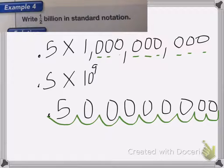And fill in my commas. 1, 2, 3, comma, 1, 2, 3, comma. I end up with 500 million. And that's all. Good luck on your homework!